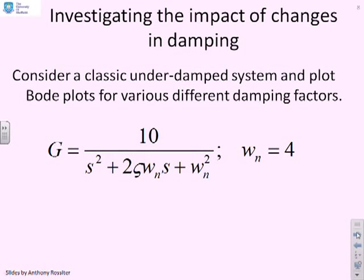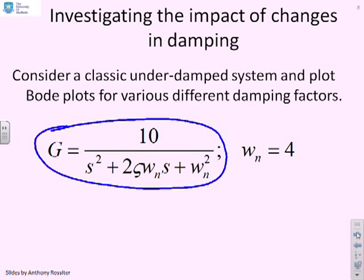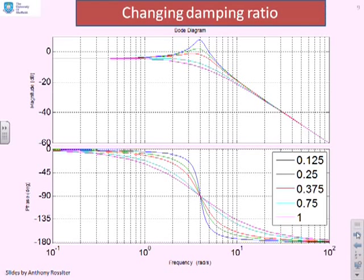Let's look at this more generally. I've given a typical normalized form, G equals 10 over s squared plus 2ζωₙs plus ωₙ squared. I'll use ωₙ equals 4 and produce Bode plots for different values of ζ to see if there's any pattern. If ζ equals 1, which means not underdamped at all, there's no peak in the gain. The phase changes smoothly and slowly, and the gain is always monotonically decreasing.